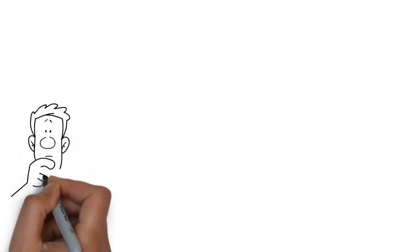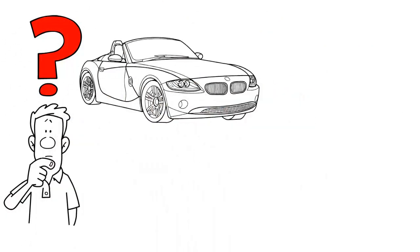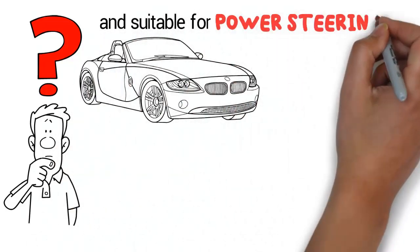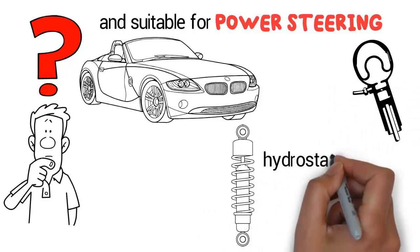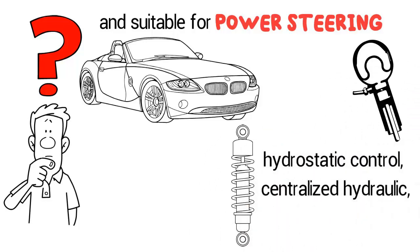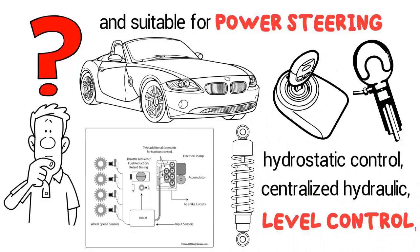What is central hydraulic fluid used for? The fluid can be used for a whole range of vehicles and is suitable for power steering, hydropneumatic suspension, shock absorbers, hydrostatic control, centralized hydraulic, level control, central lock, stability, and traction control systems.